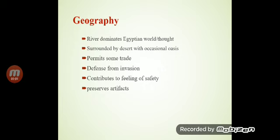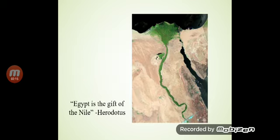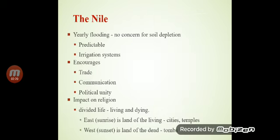Geography: river-dominated Egypt. The world was thought to be surrounded by desert, with pyramids, some trade, and defense from invasion contributing to a feeling of safety. Egypt is the gift of the Nile. The Nile is a river.